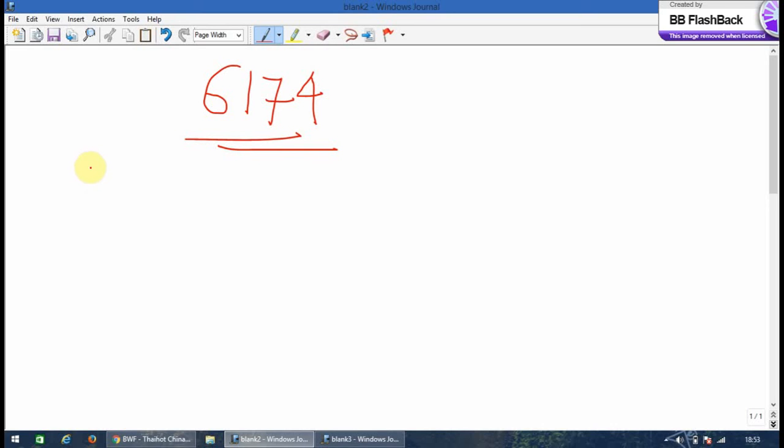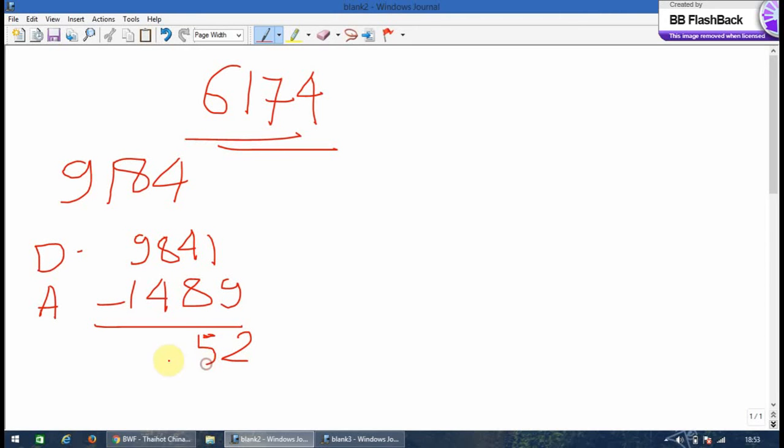So to start with the explanation, let's take any four-digit number. Let's say I take 9184. Let's arrange the number in descending order. What you get is 9841. Now in ascending order you get 1489. Now just subtract these two numbers. You get 2 and you get 5 and 3, 8.